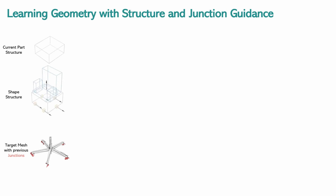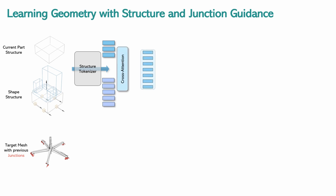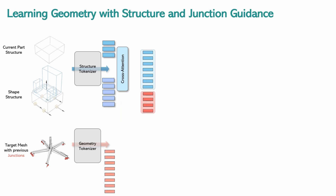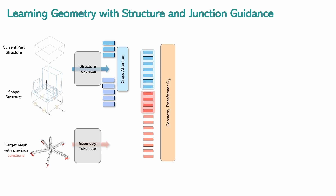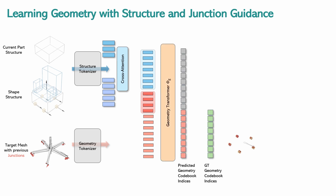The part geometry sequence is conditioned on three key aspects: its own part structure, the overall object structure, and neighboring information from the junction faces of previously generated parts. Part and object structure features are fused with cross-attention, while neighboring junction face features are appended after the structure conditioning. The geometry transformer is trained with the next-token prediction loss on the target-part indices.